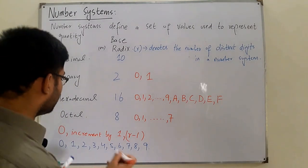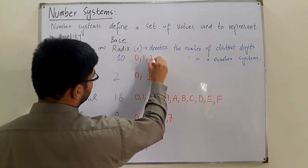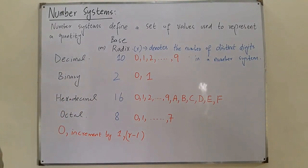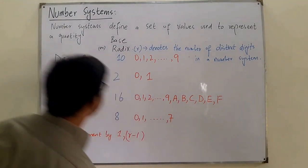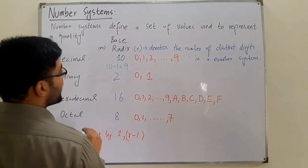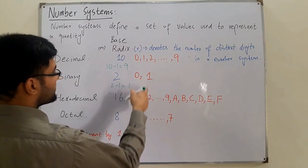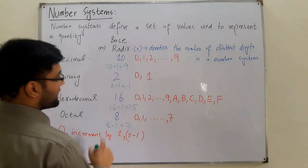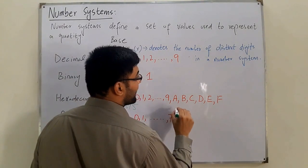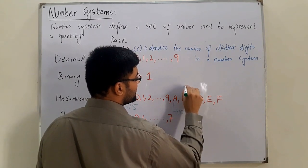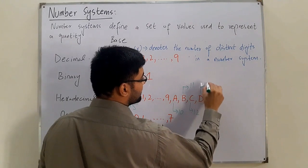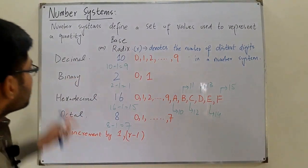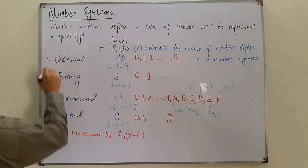Let me write this down so we don't confuse it. Using the formula r minus 1: for decimal 10 minus 1 is 9 so we go to 9; for binary 2 minus 1 is 1 so we have 0 and 1; for hexadecimal 16 minus 1 is 15 so we go up to 15; and for octal 8 minus 1 is 7 so we go till 7. A represents 10, B represents 11, C is 12, D is 13, E is 14, and F represents 15.